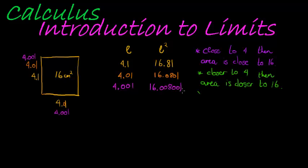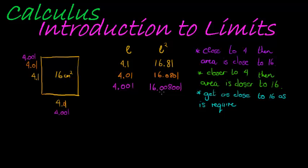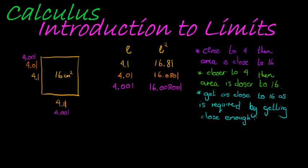What that effectively means is I can get as close to 16 as is required — so however close you want me to be to 16, without actually being 16. So I can have 16 point a million zeros before my first 8, I must just have 4 point a million zeros before my first 1. By getting close enough to 4, I can get as close to 16 as required.